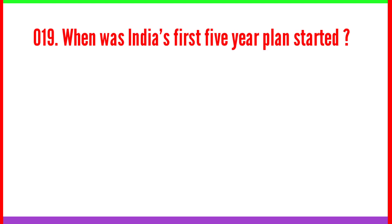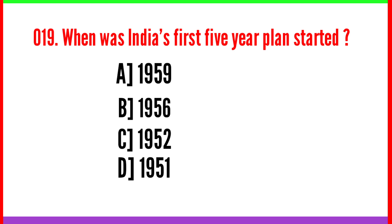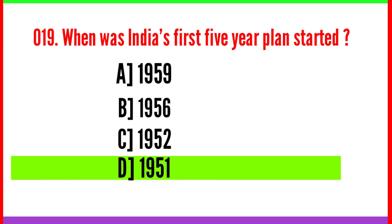Question number nineteen: When was India's first five-year plan started? Option D: 1951. Correct answer.